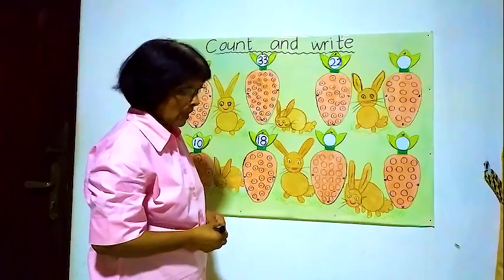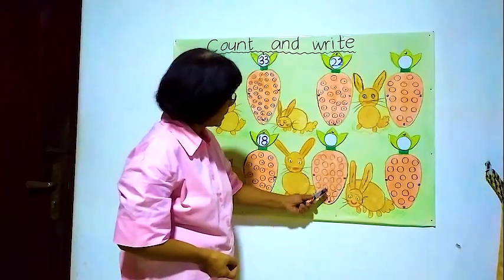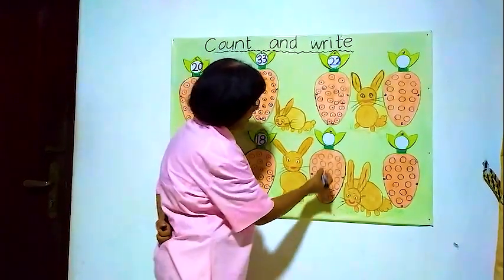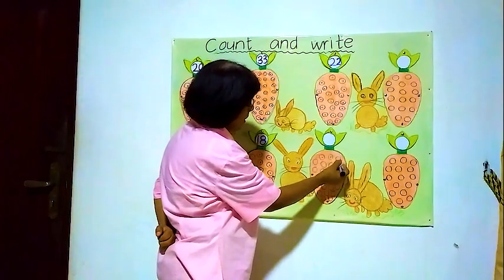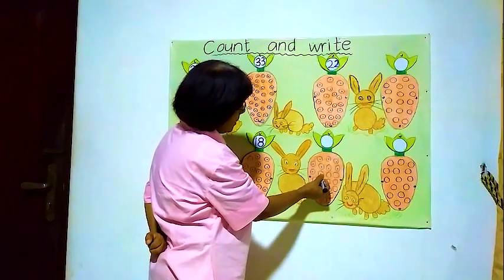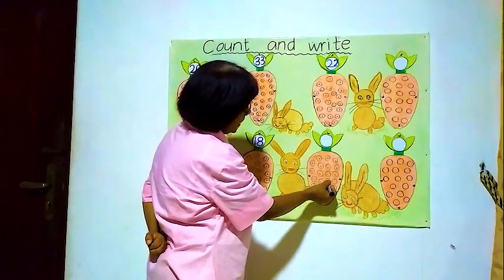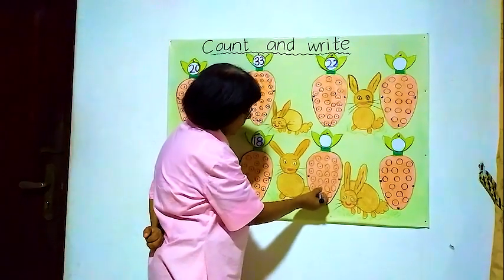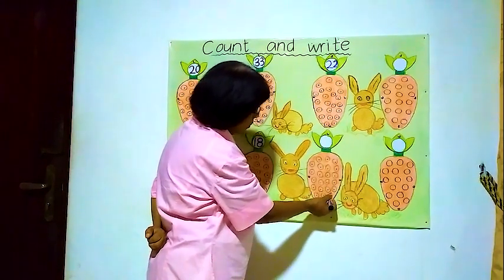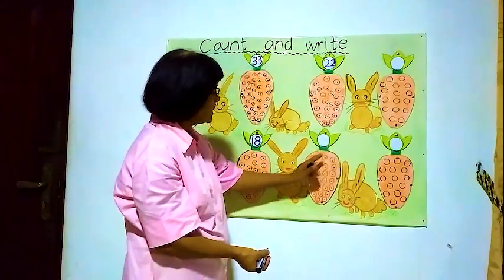Now we'll go to the next one. There are some balls inside this carrot. We'll count from the beginning. 1, 2, 3, 4, 5, 6, 7, 8, 9, 10, 11, 12, 13, 14, 15, 16, 17, 18, 19, 20, 21, 22, 23, 24 balls inside this carrot.